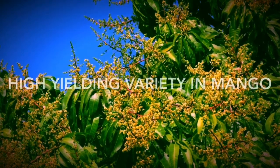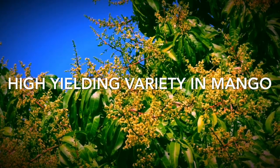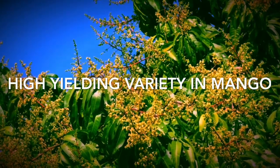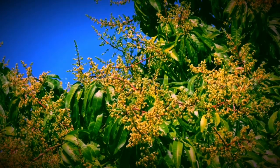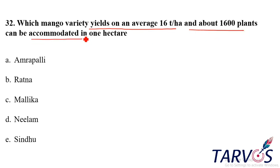Hello everyone. We have a discussion about IBBS-AF in the heart culture. The Manga variety yields R-Rate 6010. One variety is 6010. About 1,600 plants can be accommodated for one hectare.